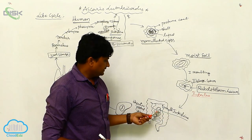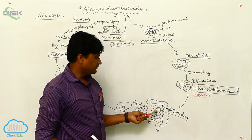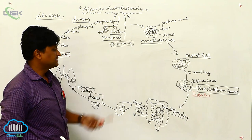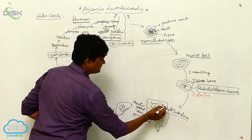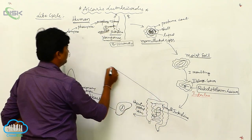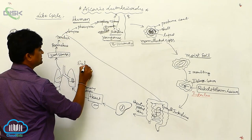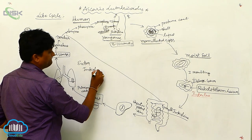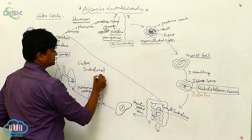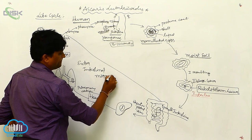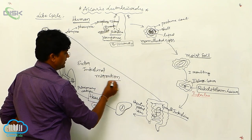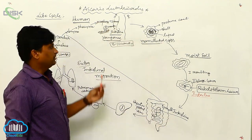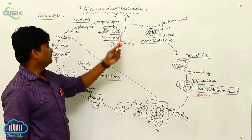The entire journey from the small intestine through the liver, heart, lungs, and back to the intestine is called extra-intestinal migration. This is a very important concept in the life cycle of Ascaris lumbricoides.